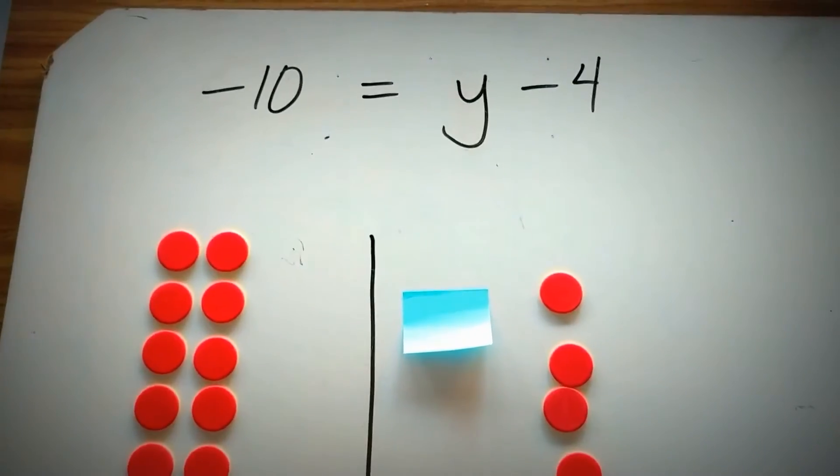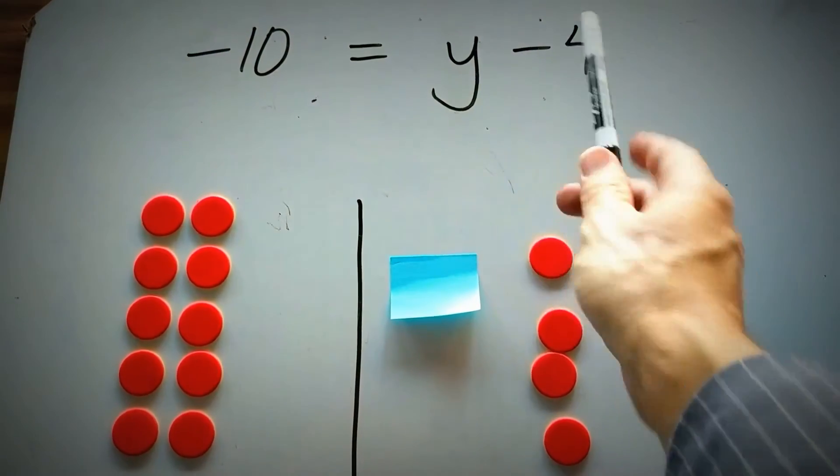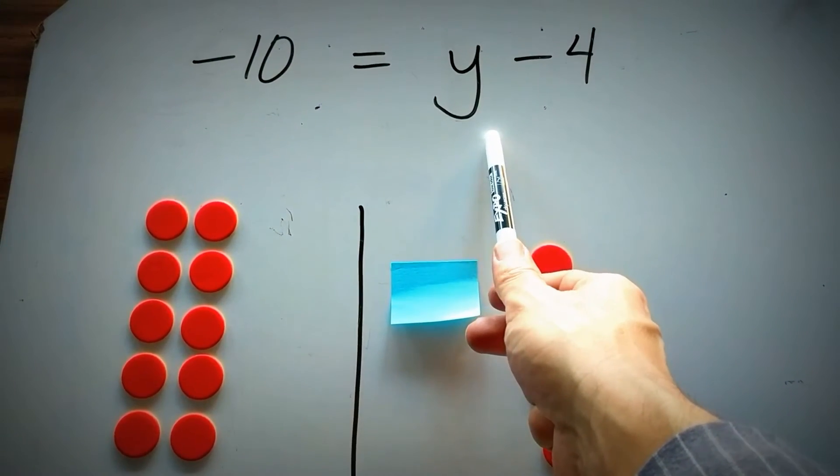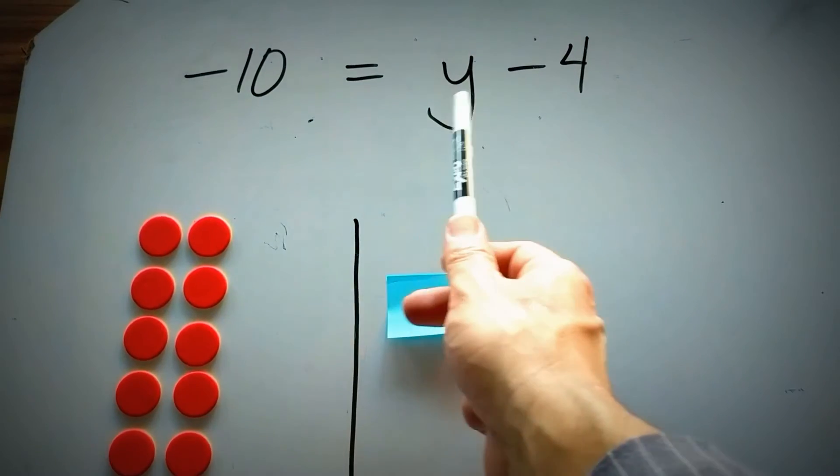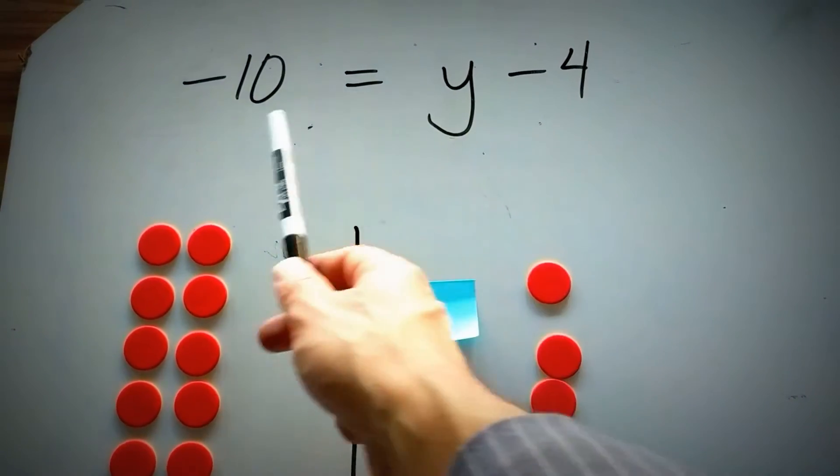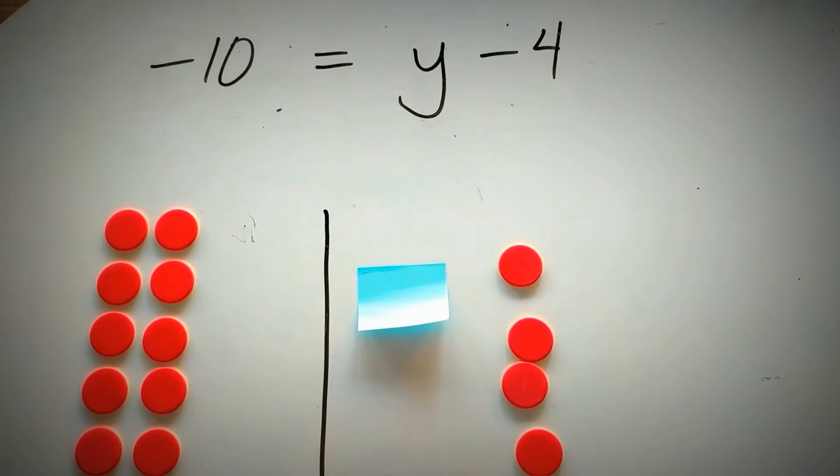Let's take a second look at an example, this time with subtraction. Now, notice the variable is on the right-hand side of the equation this time. It doesn't matter if the variable is on the right-hand side or the left-hand side. We still treat it in the same way.